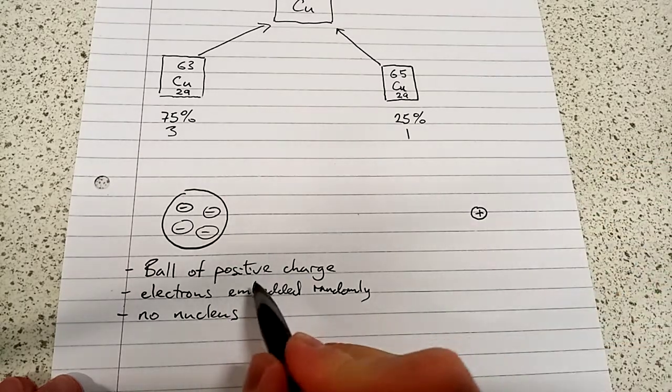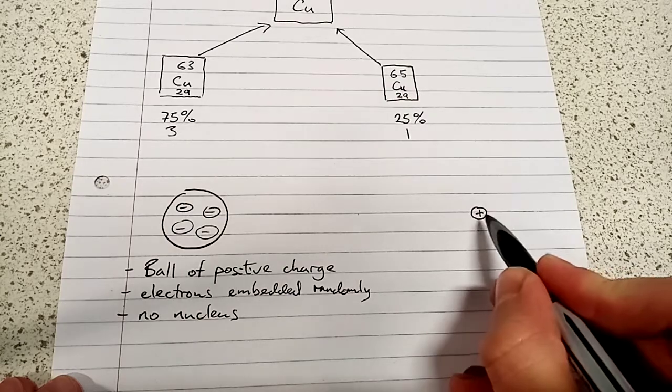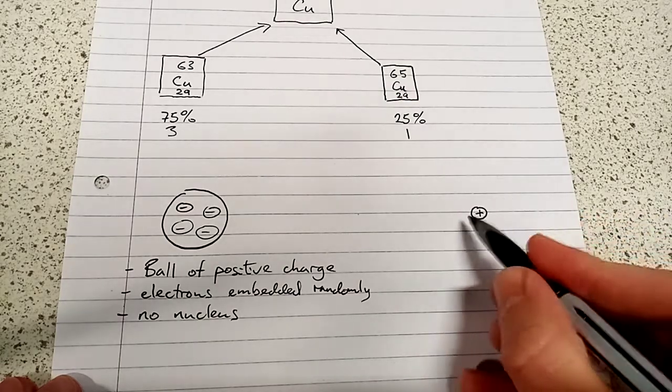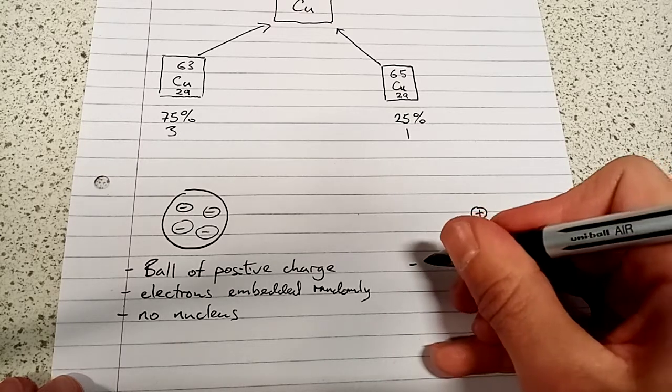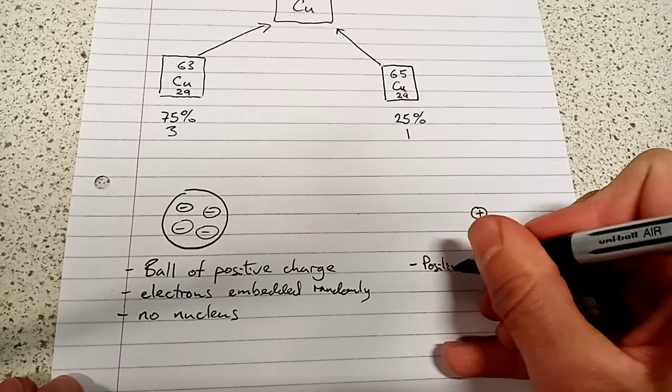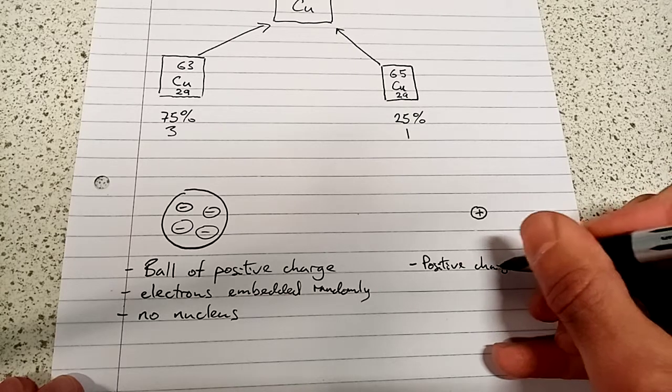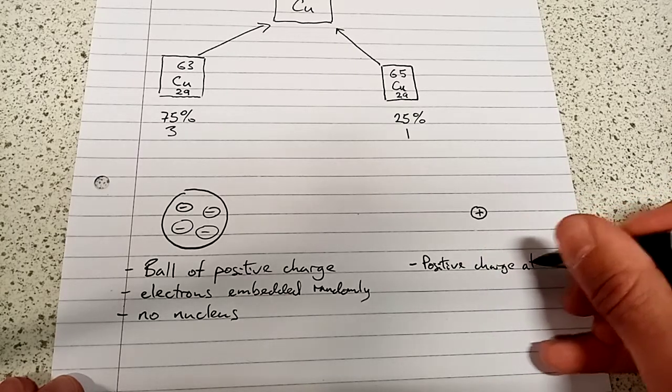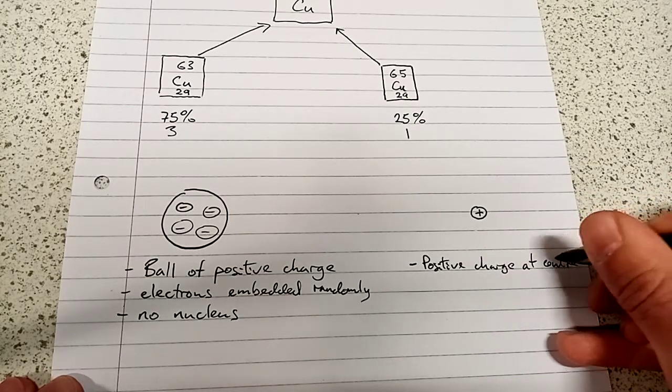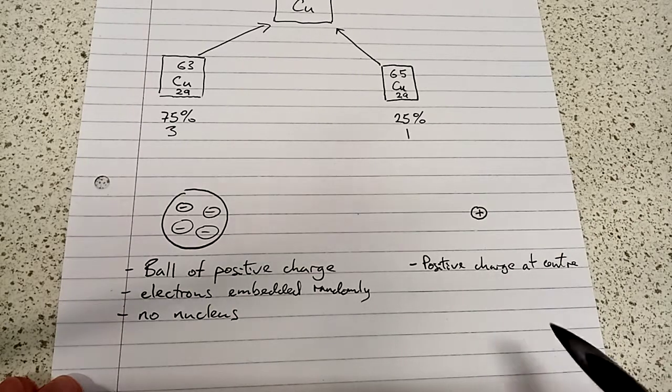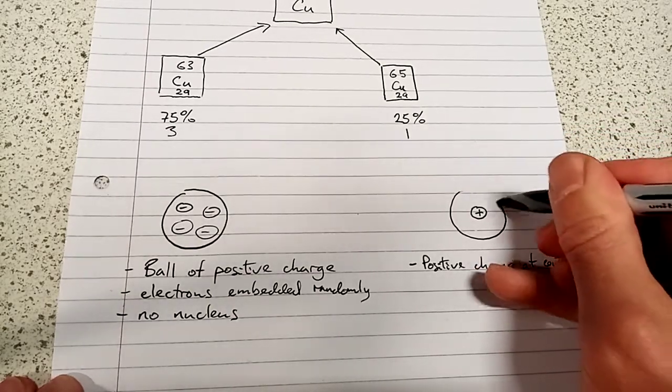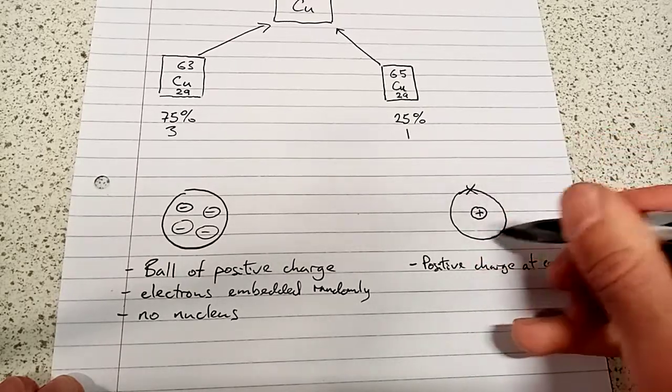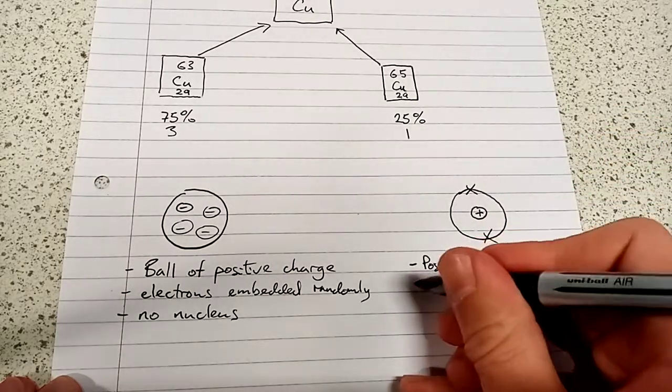We don't have a ball of positive charge, but the positive charge is at the center. It's centered at the nucleus. So our positive charge is at the center. And what about the electrons? Well, the electrons are in shells around the positive nucleus.